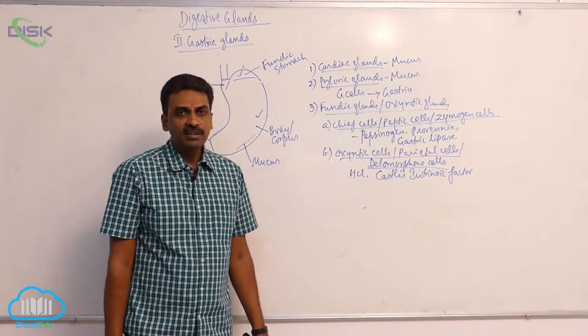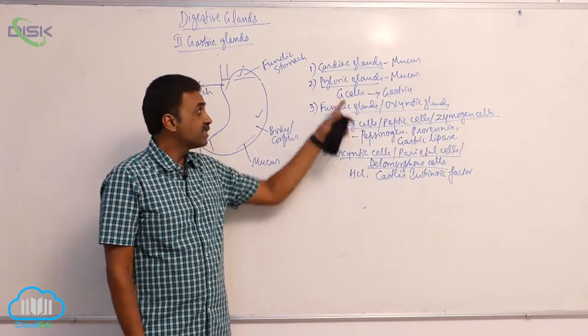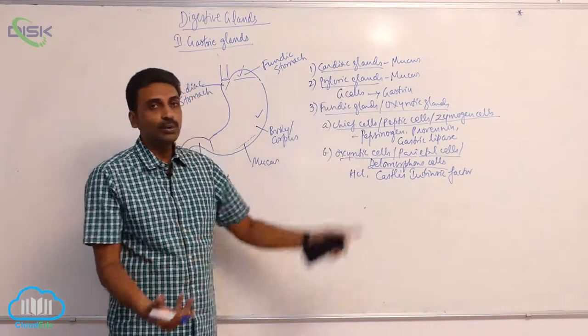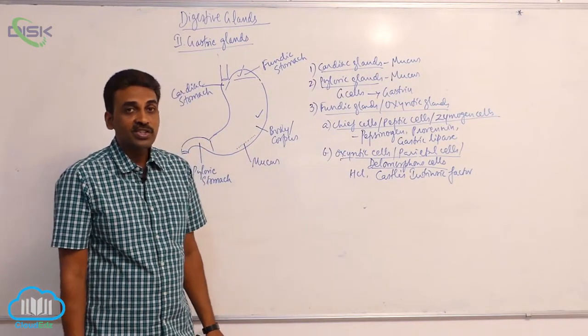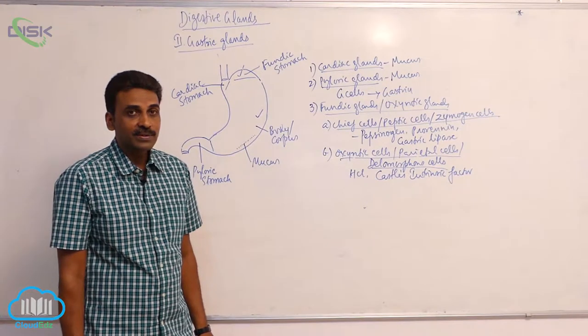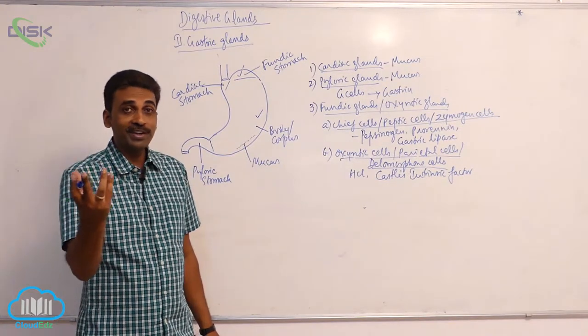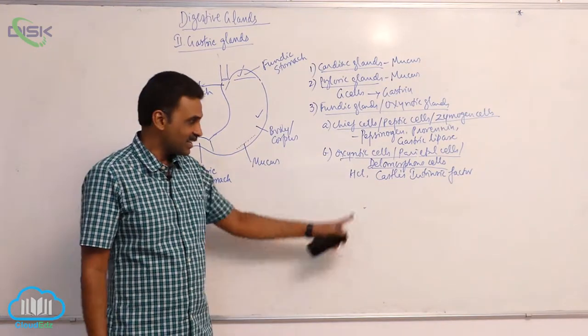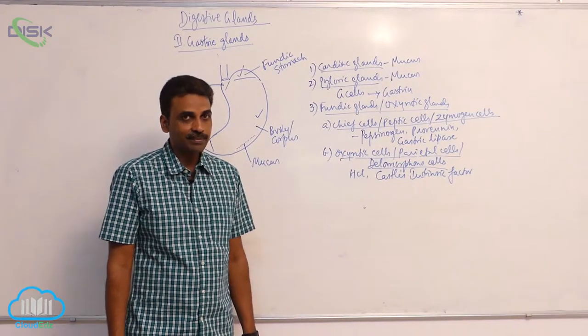Hydrochloric acid gives that acidity to gastric juice — a pH of 0.9 to 1.8, making it highly acidic. That acidity comes from hydrochloric acid.